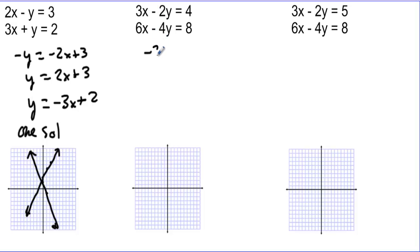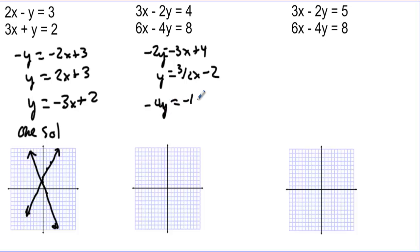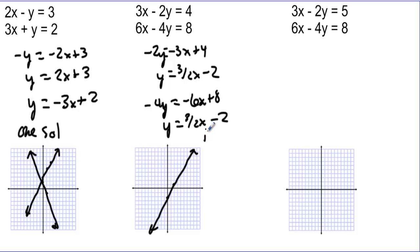For the second case, negative 2y equals negative 3x plus 4, dividing by negative 2 gives y equals 3 halves x minus 2. The second equation, negative 4y equals negative 6x plus 8, dividing by negative 4 also gives y equals 3 halves x minus 2. This is the exact same line — y-intercept of negative 2, slope 3 halves, up 3 and over 2. So this system has infinitely many solutions.